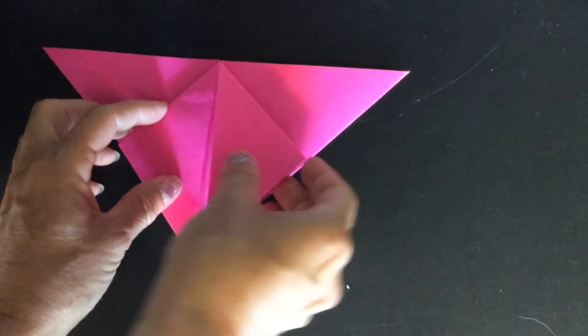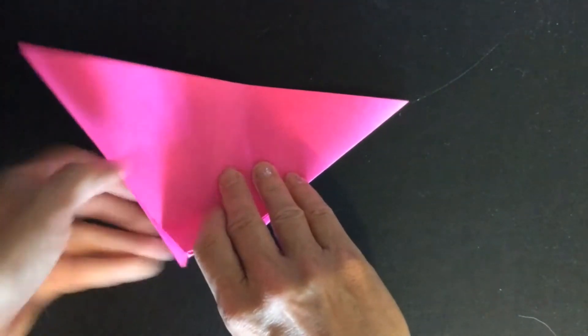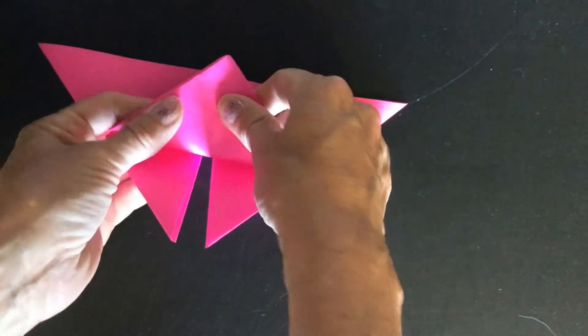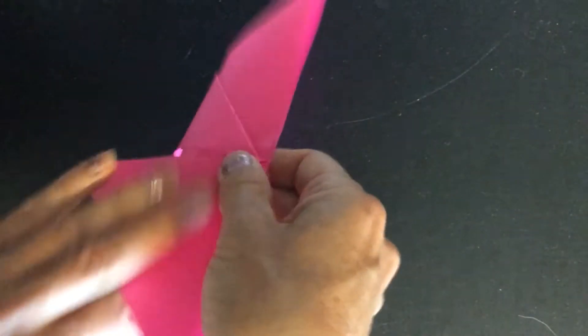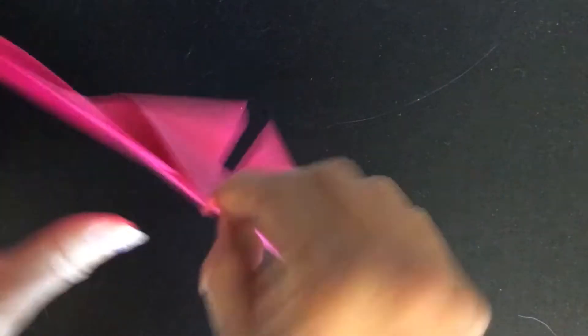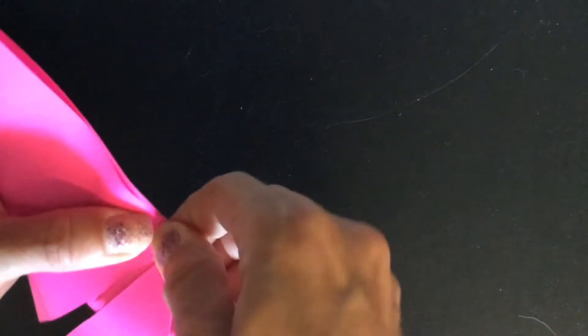And now you turn your butterfly over and you can pull the back side up to the top. But you're not going to fold it here. You're just going to bend it and fold the back side over the top. Like that.